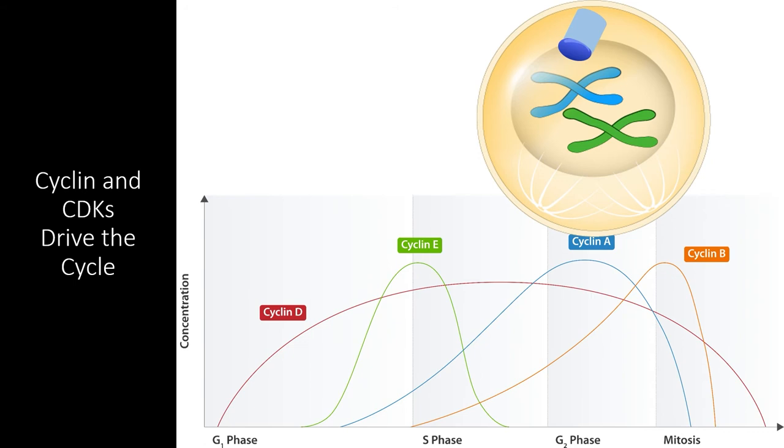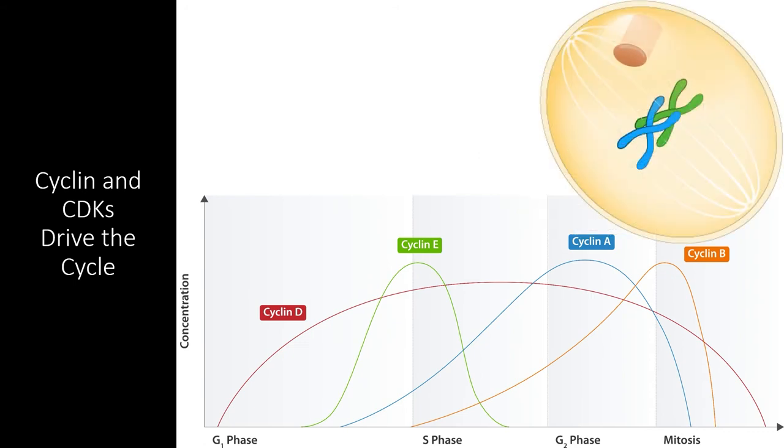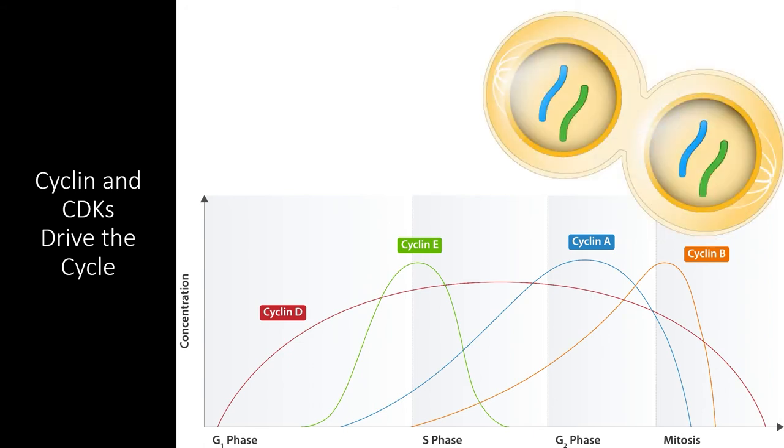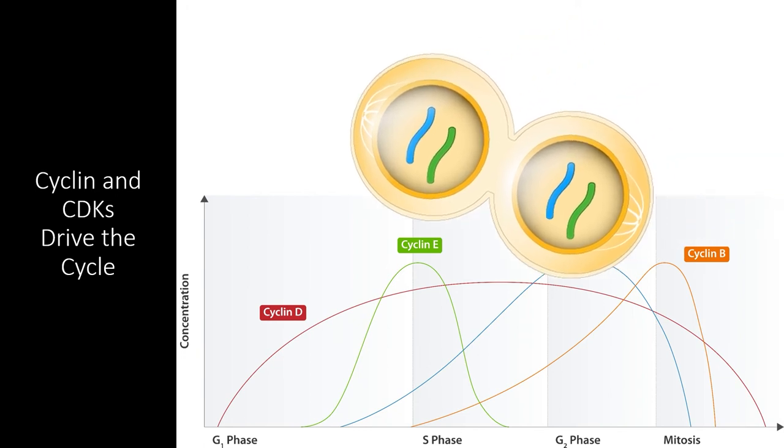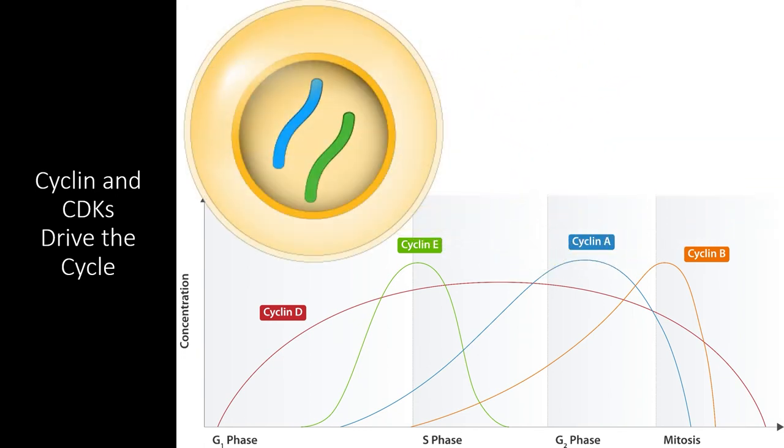Cyclin B peaks during metaphase at the spindle checkpoint and the CDK specific to cyclin B breaks down the proteins that hold the sister chromatids together at their centromeres. This allows the cell to enter anaphase, fully separate the chromosomes, and eventually undergo cytokinesis to become two daughter cells. After this, the cell cycle starts anew with the slow introduction of cyclin D in the G1 phase.